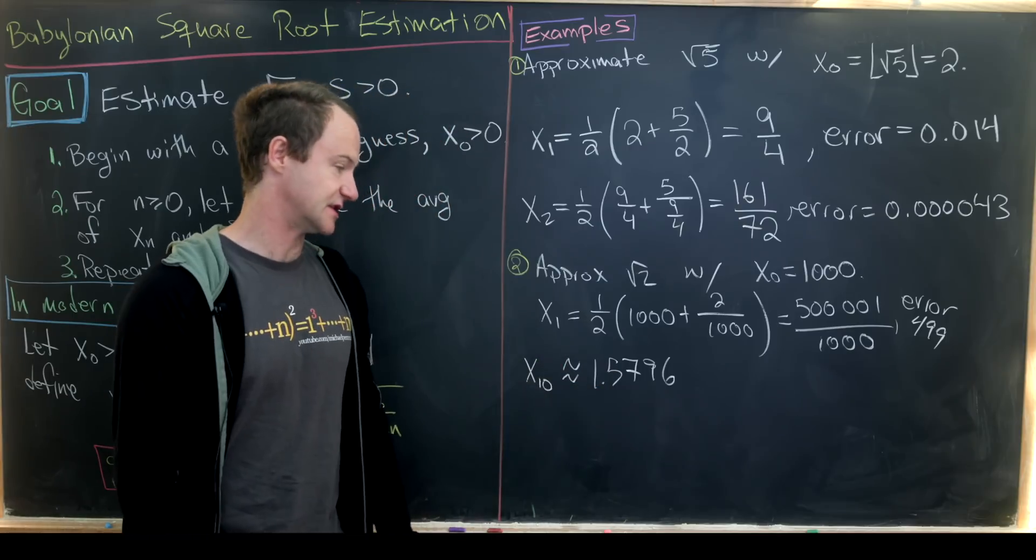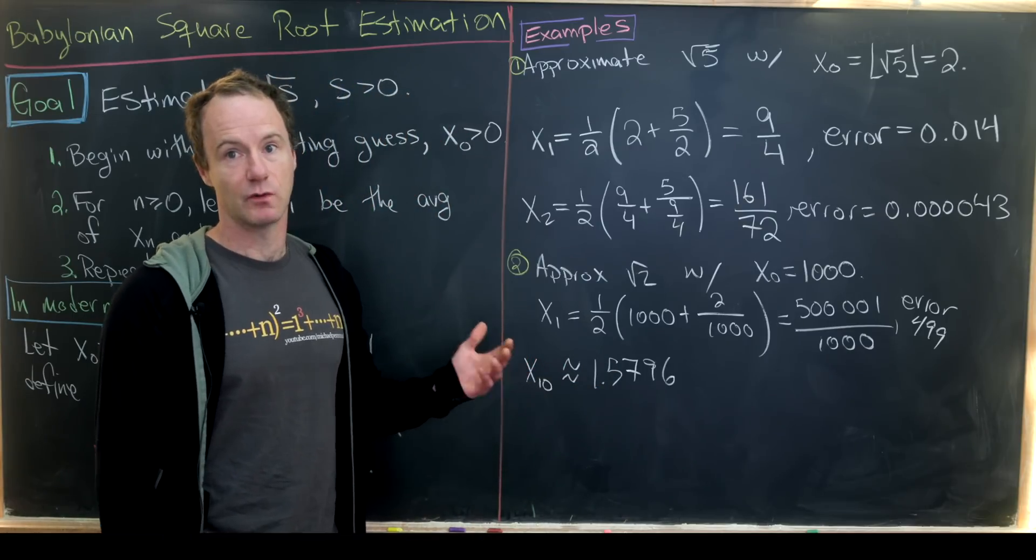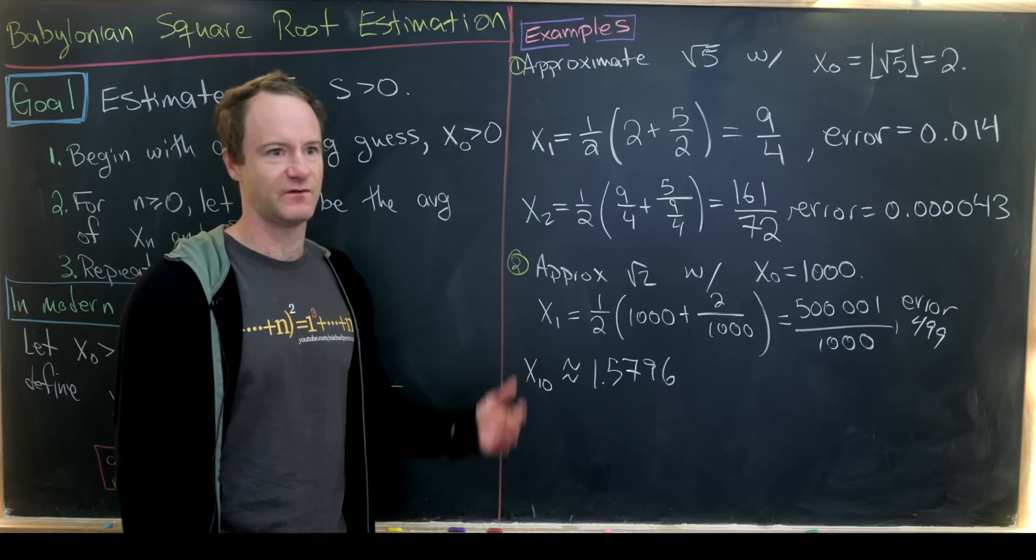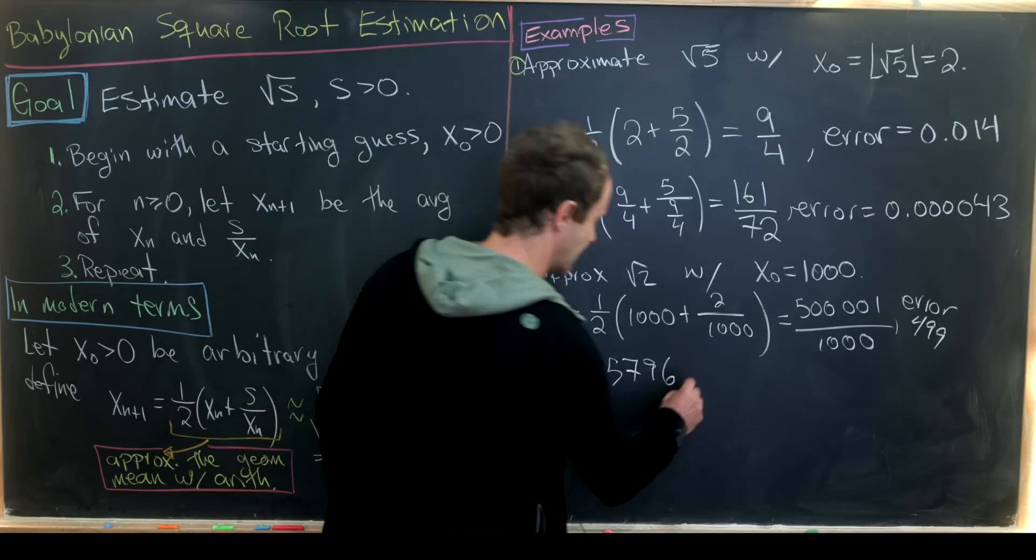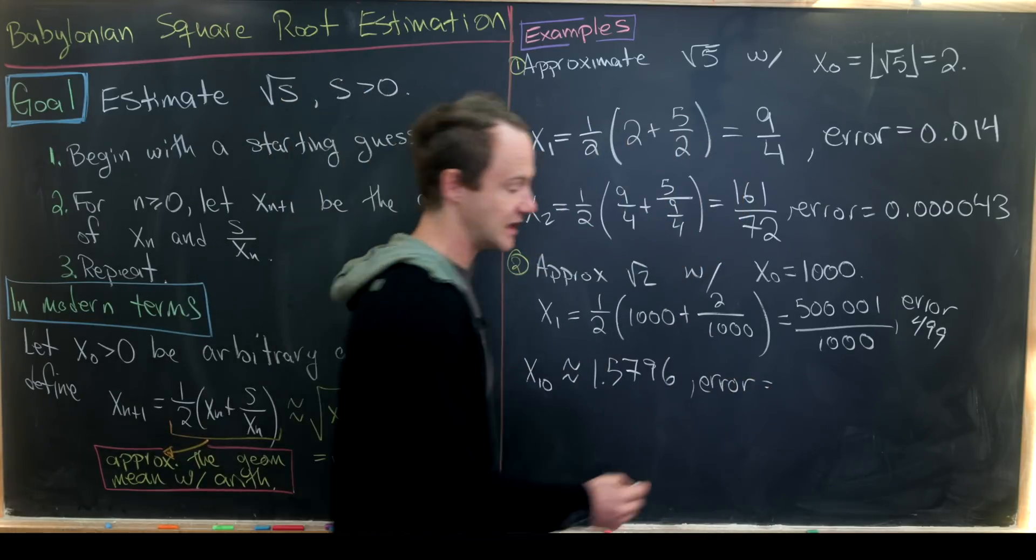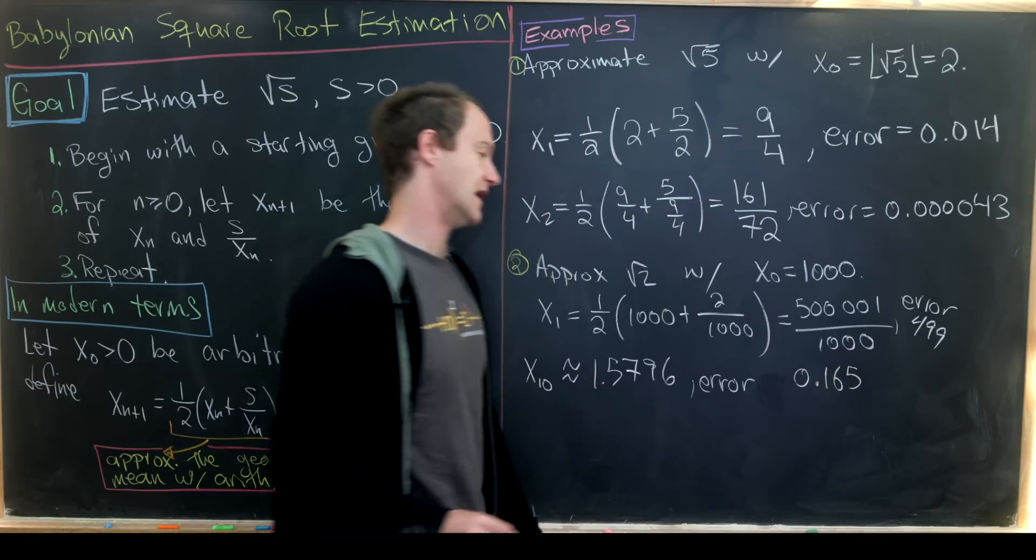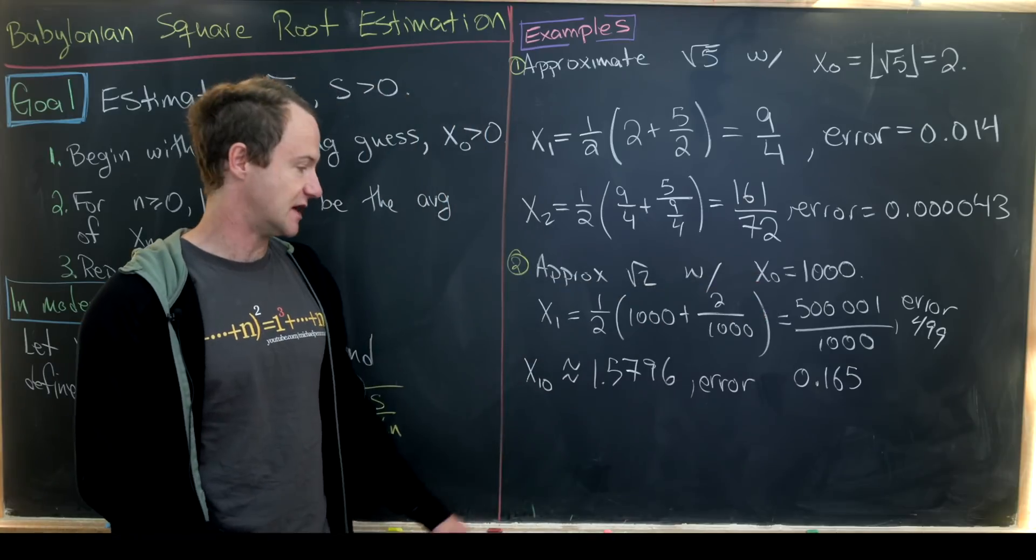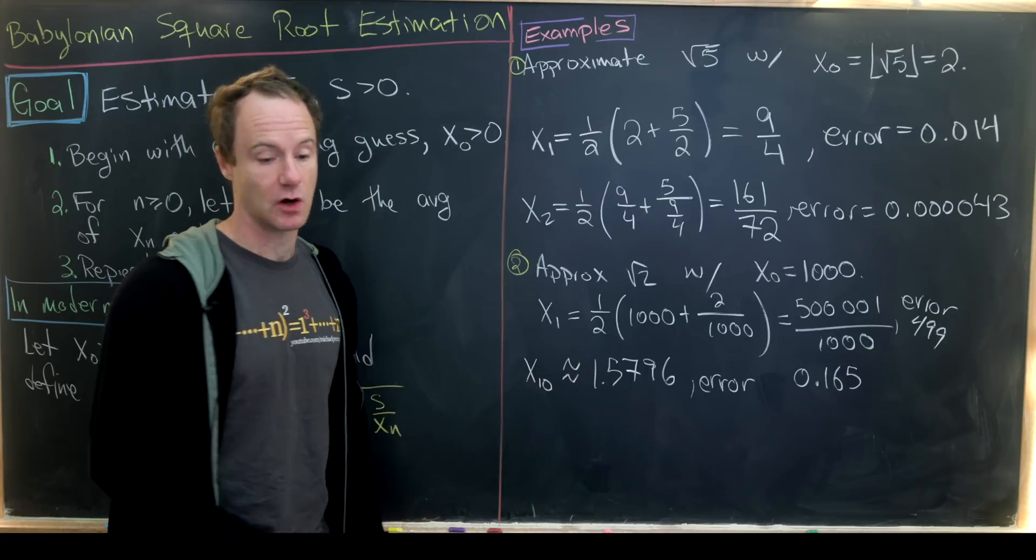x₁₀ ends up being approximately equal to 1.5796. I say approximately equal because in fact it's a rational number with a very large numerator and a very large denominator that wouldn't fit on the board. In fact, it barely fits on the computer screen. So what's the error in this case? The error is about 0.165. So even though we made a pretty terrible first approximation, only after 10 steps, we have a fairly small error.